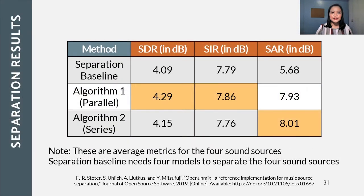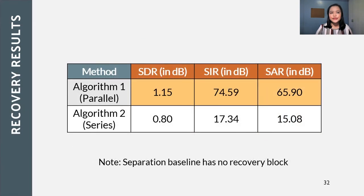Please note that the separation baseline needs four models to separate the four sound sources. Based on the three metrics, the parallel configuration has the best separation performance for SDR and SIR, while the series configuration achieved the highest SAR. For recovering the audio mixture, the best implementation is the parallel system. Note that the separation baseline has no recovery block, hence only the two implemented systems were compared.